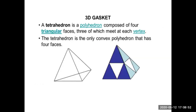What is a tetrahedron? It is a polyhedron composed of 4 triangular faces, 3 of which meet at a vertex. It is the only tetrahedron which is a convex polyhedron that has 4 faces. You can observe in the diagram this tetrahedron made up of 4 faces. One face of the tetrahedron is a triangle being subdivided into 4 different triangles. Once the center triangle is removed, the remaining 3 triangles can again be subdivided into 4 other triangles.